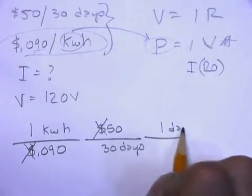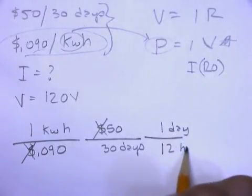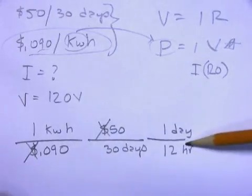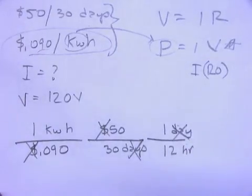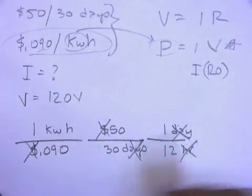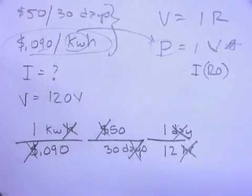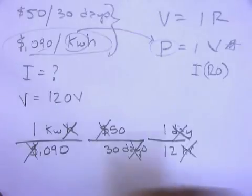So let's see here. In one day of operation, I only use it 12 hours. Usually in one day there's 24 hours, but I'm only using it half the day. So this day cancels off with that day. And if you look, this hour cancels off with that hour. And then when you look through here, the only thing I have left is kilowatts.